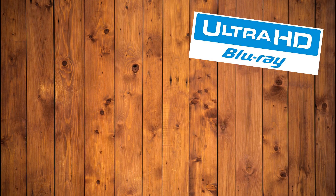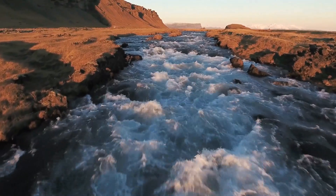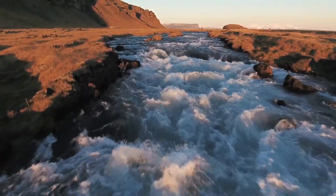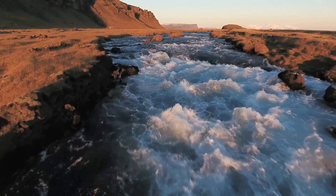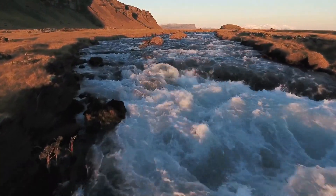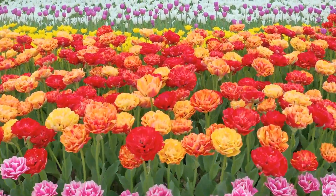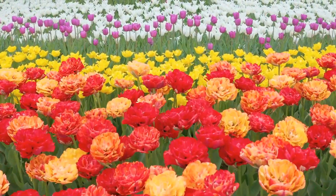A good rule of thumb for determining if a screen will give you a good HDR experience is to look for 1,000 nits as a maximum brightness. With 1,000 nits, your screen can get bright enough to truly pull off the HDR effect, simulating deep dark blacks and brilliantly bright whites. The easiest way to cut corners with an HDR display is to limit the panel's maximum brightness — which is why panels reaching 1,000 nits often carry the appropriate specification like HDR10 Plus or Dolby Vision. Once you have your HDR display sorted, make sure to actually enable the effect if you're on a computer — that's something you really have to do.